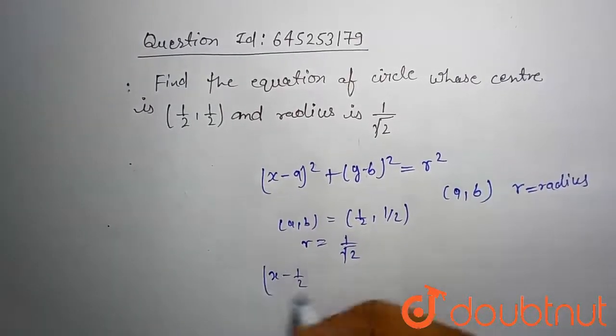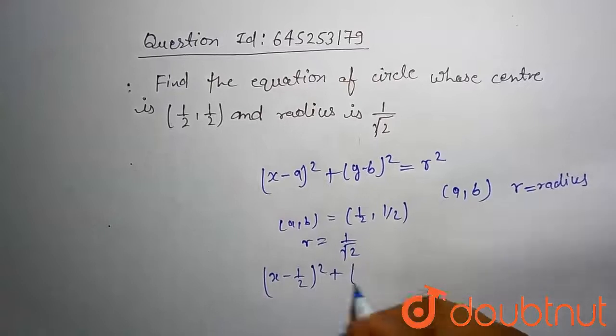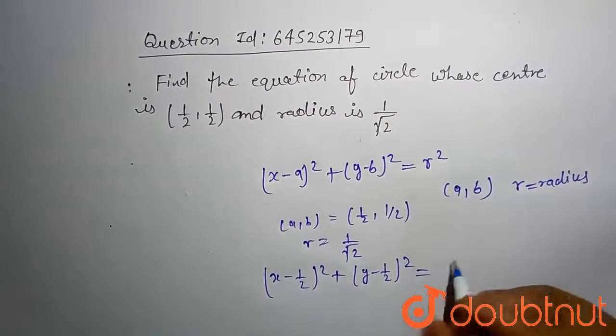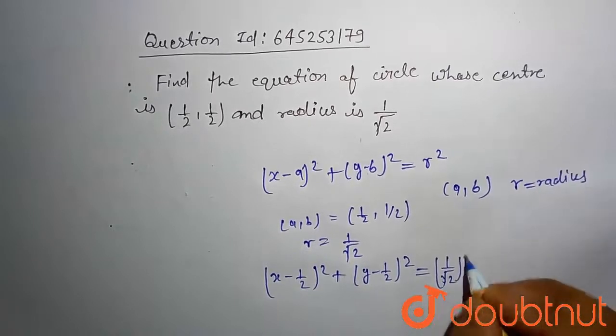x minus 1 by 2 whole square plus y minus 1 by 2 whole square is equal to 1 by root 2 whole square.